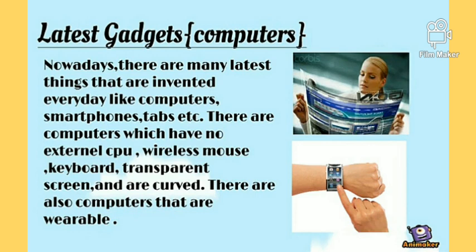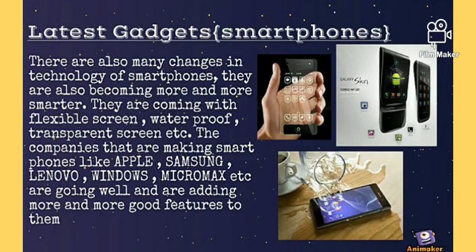As for the latest gadgets — smartphones — as you can see on your screen, there are many changes in technology. Smartphones are becoming smarter, coming with flexible screens, waterproof features, transparent screens, etc. Companies making smartphones like Apple, Samsung, Lenovo, Windows, and Microsoft are going well and adding more and more good features. In our next class, we will learn more about smart gadgets.